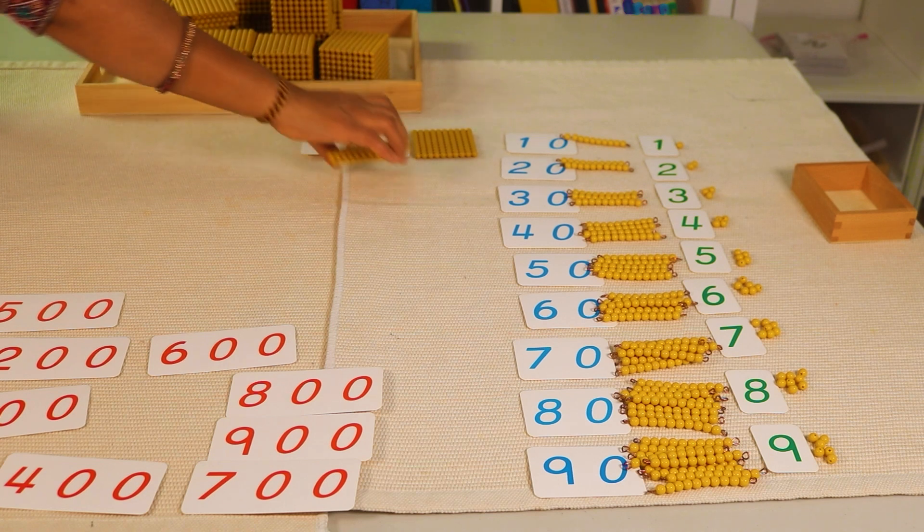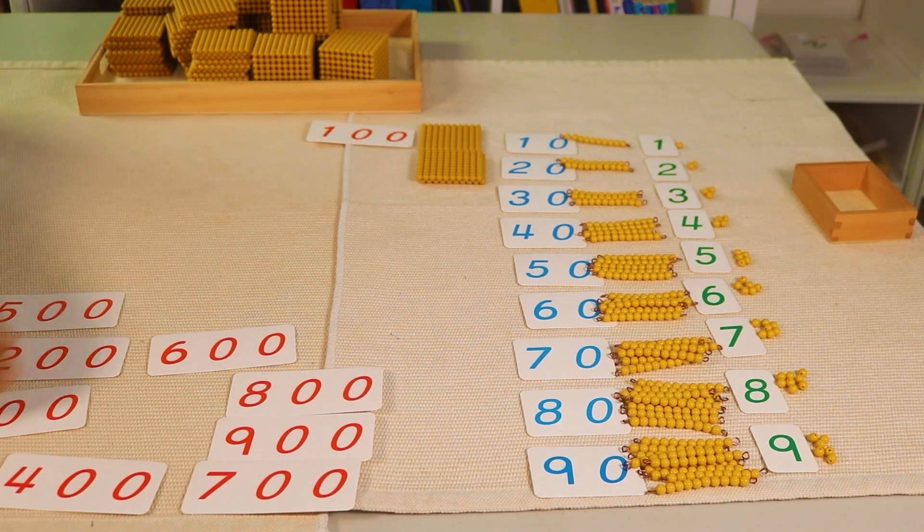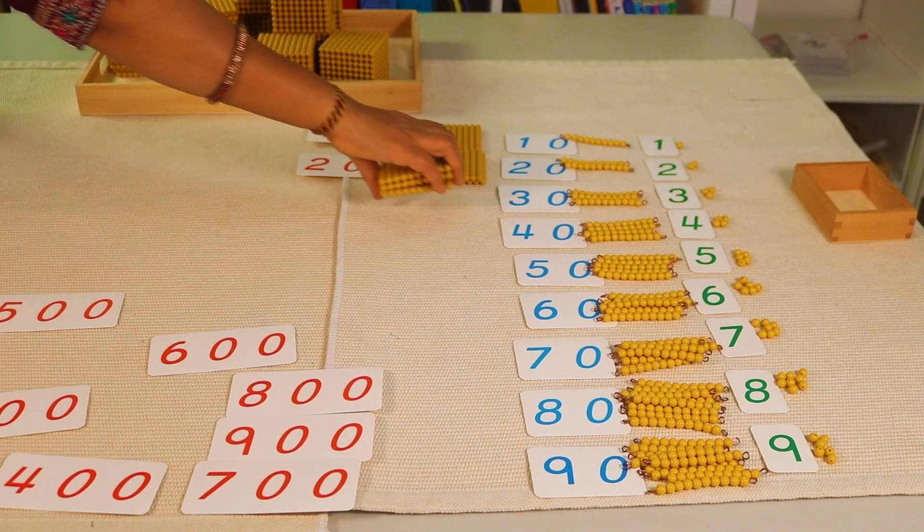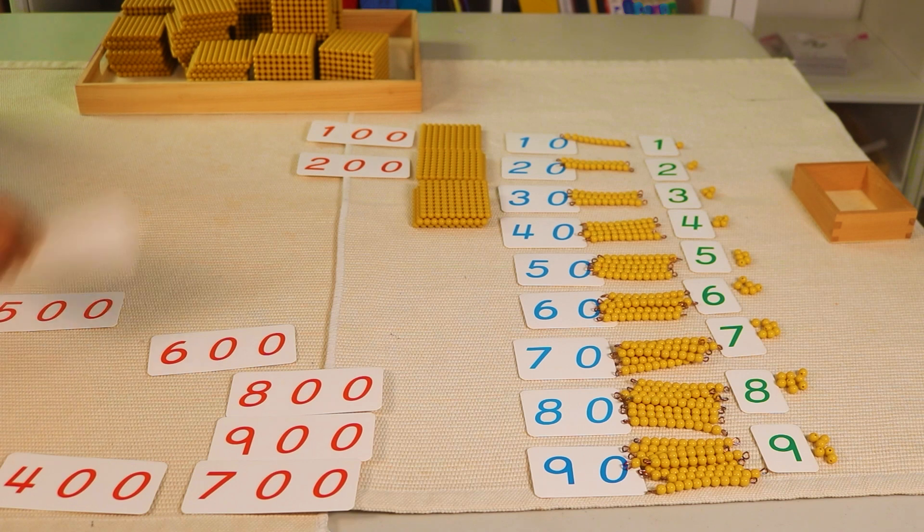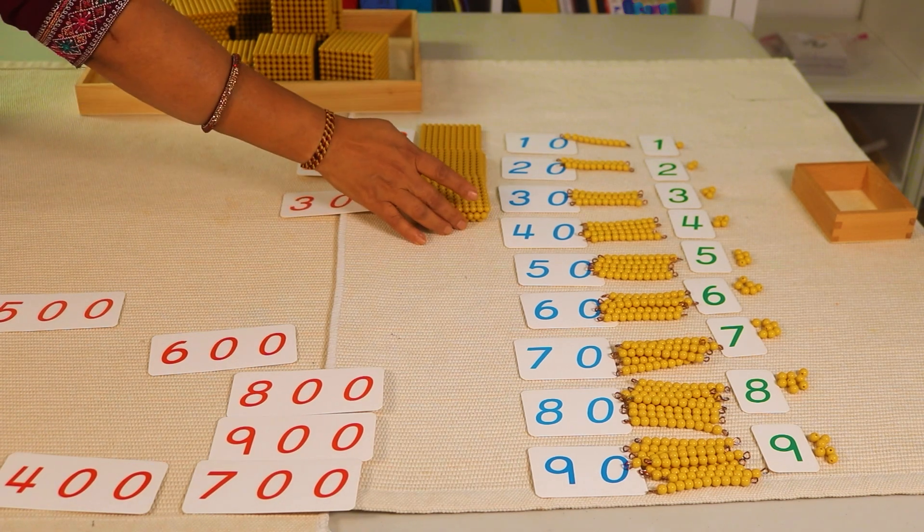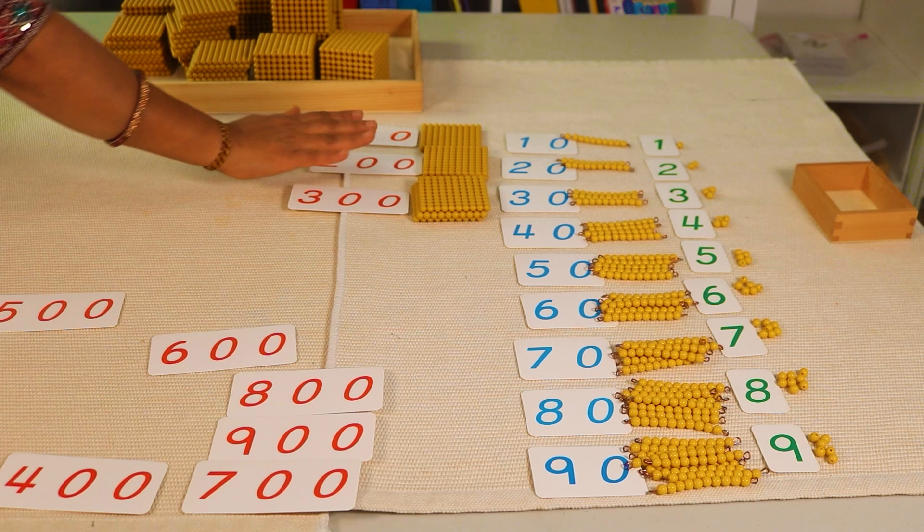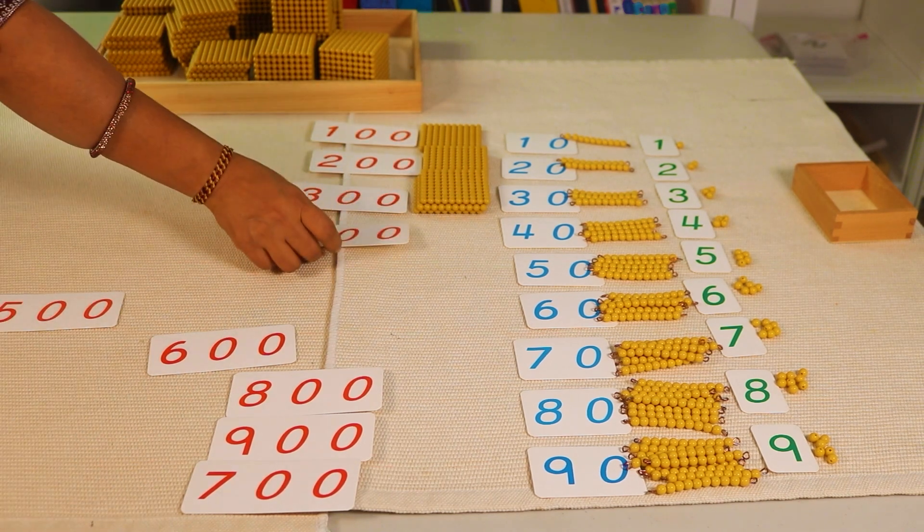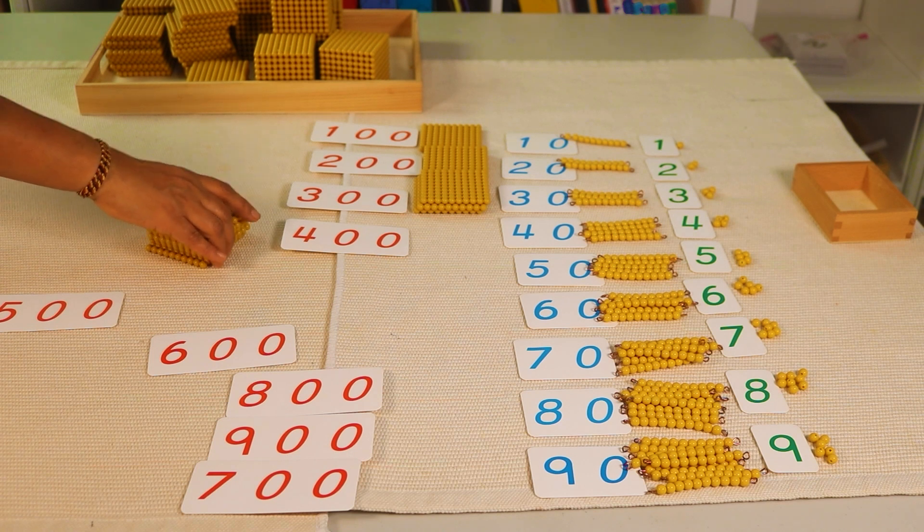What comes after one hundred? Two hundred. This is two hundred. This is one, two. Three hundred. Where is three hundred? This is three hundred. Four hundred. This is one hundred, two hundred, three hundred. What comes after three hundred? Four hundred. One, two, three, four hundred.